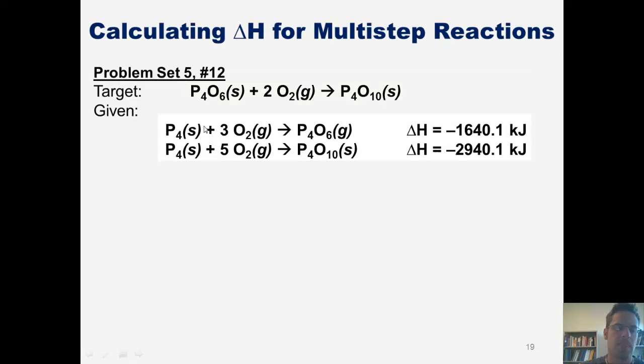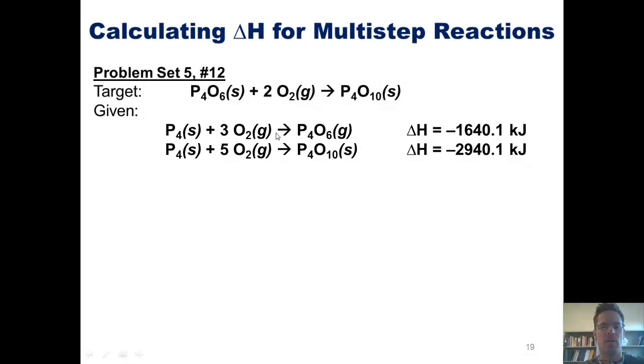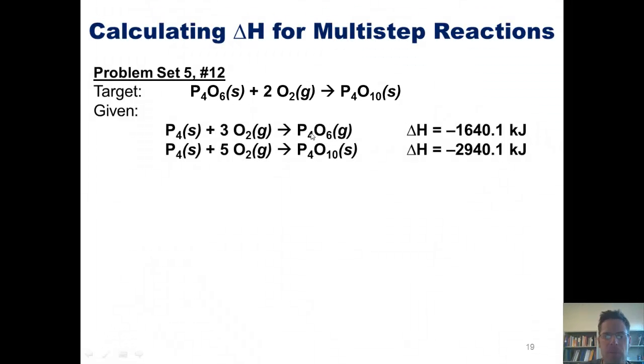What I'm trying to do is manipulate these two stepwise reactions in some way so that when I add them together, they will add up to give me the final target reaction shown at the top. Now because P4O6 is on the right side of the equation here, but on the left side of the equation in the final reaction I'm trying to get to, what I can do is just switch the products and the reactants and change the sign of the delta H. In other words, P4O6 being placed on the left side of the equation and P4 plus 3O2 being placed on the right side of the equation will have a delta H of positive 1640.1 kilojoules.